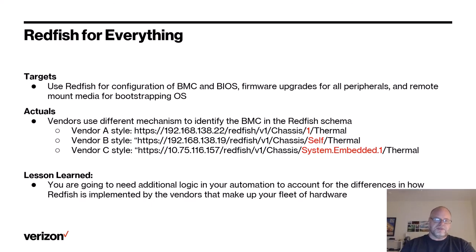I love using Redfish, but I do see opportunities for improvement. In our environment with several different server vendors, the latitude in the current Redfish specification means we deal with differences in how vendors identify instances — for example: '1' for vendor A, 'self' for vendor B, and 'system embedded' for vendor C. This is maddening when writing automation to manage a mixed fleet. Solutions include adding code to your automation to detect which vendor you're talking to and adjust API syntax accordingly, or grouping servers and writing vendor-specific code. We're pushing our server vendors to adopt 'system' as the standard instance name in their Redfish implementations.